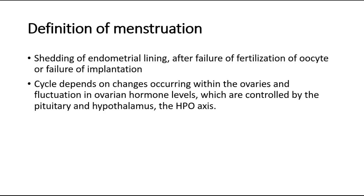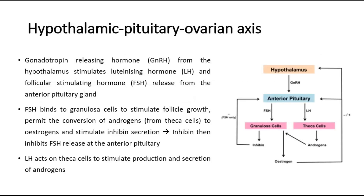The menstrual cycle depends on the changes occurring within the ovaries and also depends on the fluctuation in ovarian hormone levels, which are controlled by the pituitary gland and hypothalamus. This is the hypothalamic-pituitary-ovarian axis. Here is a picture of the hypothalamic-pituitary-ovarian axis.